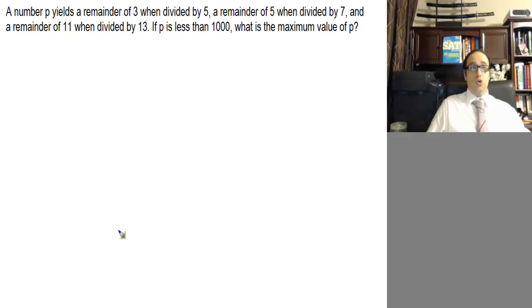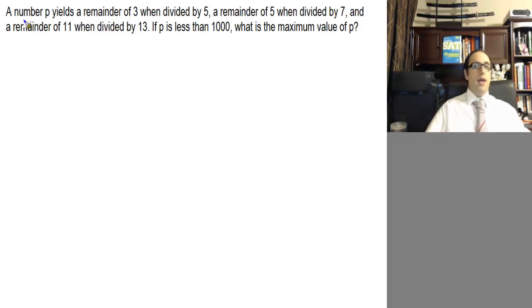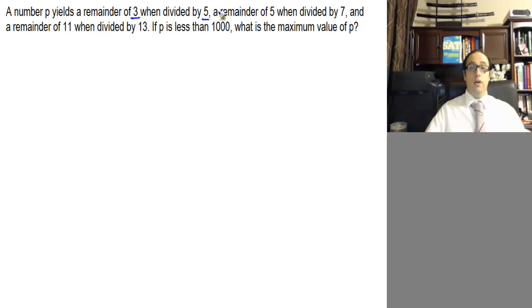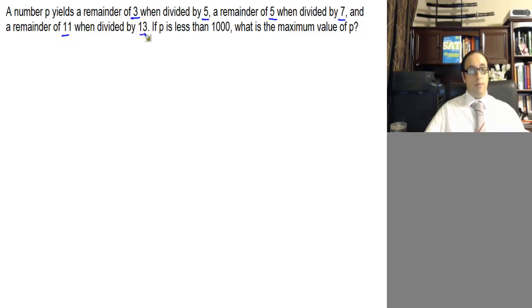Here is a difficult question. A number p yields a remainder of 3 when divided by 5, a remainder of 5 when divided by 7, and a remainder of 11 when divided by 13.